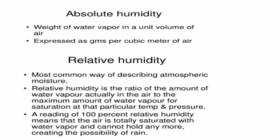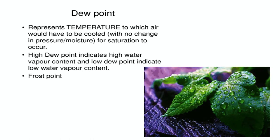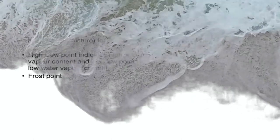The most common way of describing atmospheric moisture is relative humidity. For example, a reading of 100% humidity means that the air is totally saturated with water vapour and cannot hold any more, creating the possibility of rain. The dew point represents the temperature to which air would have to be cooled for saturation to occur. High dew point indicates high water vapour content, low dew point indicates low water vapour content, and there is a frost point at which there is no water vapour content in the air.